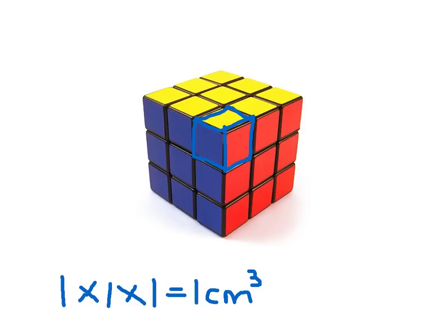We can simply count them up by counting one, two, three, four, five, six, seven, eight, nine. We can see there's nine on that side, nine in the middle here, and nine on the end. So that's three times nine, which means this equals 27 cm³.